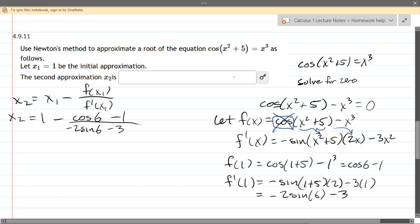And there's the chain rule part that shows up right there. Separately, you're going to do the derivative of x cubed, which is 3x squared, and you're subtracting it. So there's our f prime.